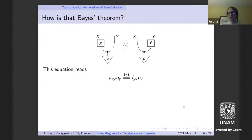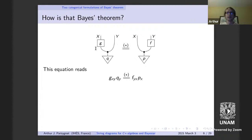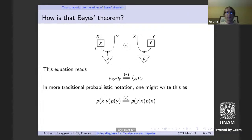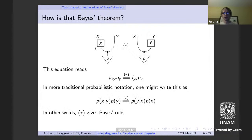Written out on components, the equation describes a map from the single element set to X cross Y — a probability measure on Y. The two different probability measures are equal. In traditional probabilistic notation: the probability of x given y times the probability of y equals the probability of y given x times the probability of x. That's the standard Bayes' rule, modulo dividing one term on both sides.